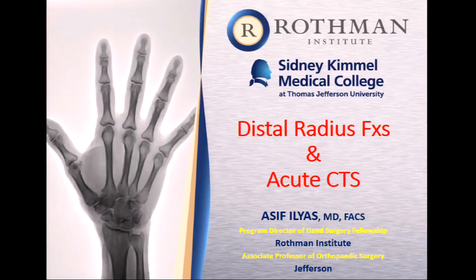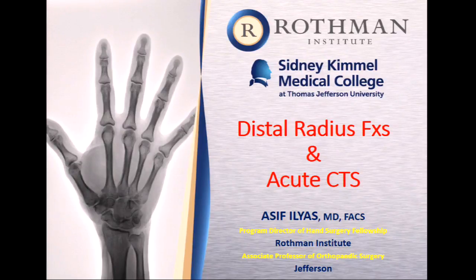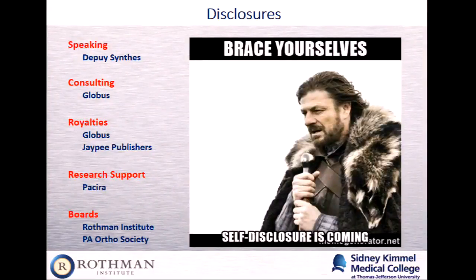Distal radius fractures are interesting topics because they're common fractures with a lot of nuances, a lot of variables to consider, and a lot of ways to treat them. Fortunately, they tend to be relatively forgiving fractures. So we study and talk about them a lot. What we're going to consider and discuss here is acute carpal tunnel syndrome. Some disclosures — nothing relevant to today's talk.